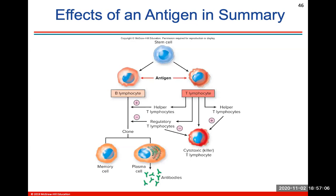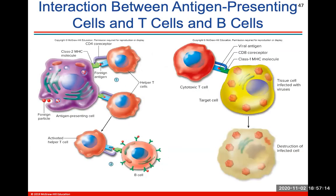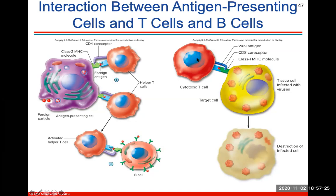Here's a summary of how an antigen is handled — whether by B lymphocytes or T lymphocytes — and the different types of each. This shows the interaction between antigen-presenting cells, T cells, and B cells, showing how the CD8 coreceptor is in a cytotoxic T cell and how an antigen binds to a CD4 receptor in a class 2 antigen-presenting cell.